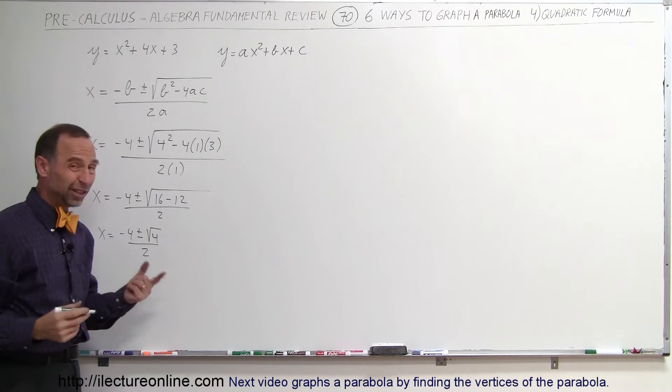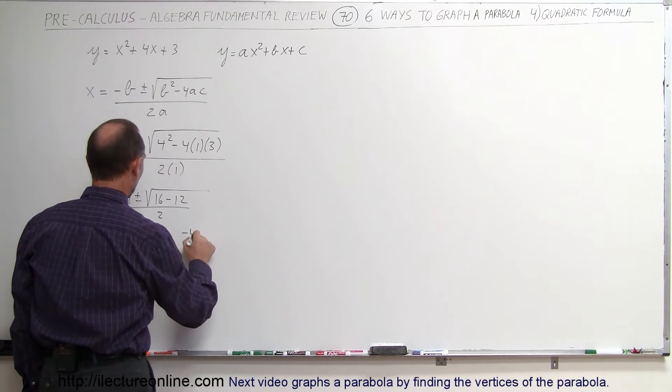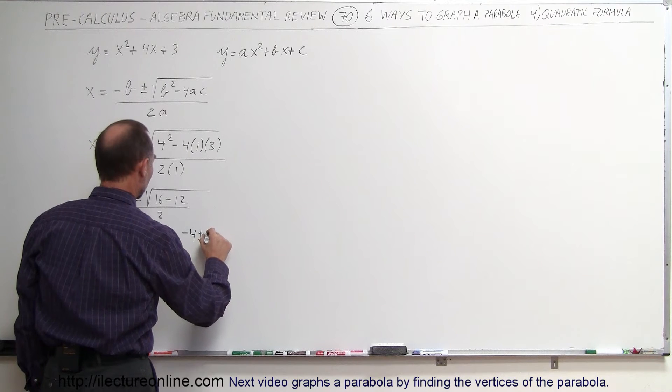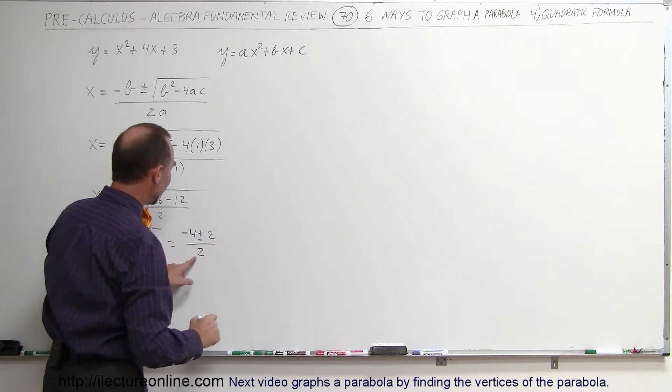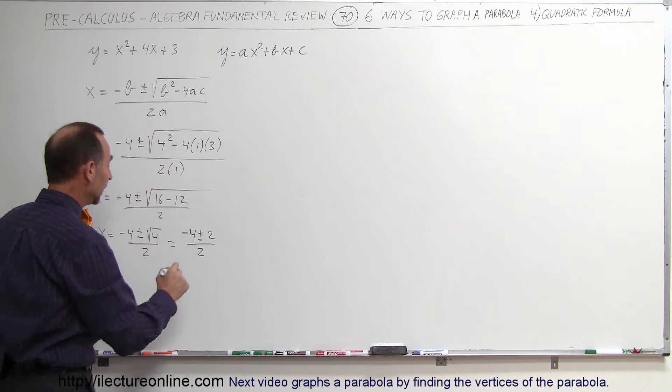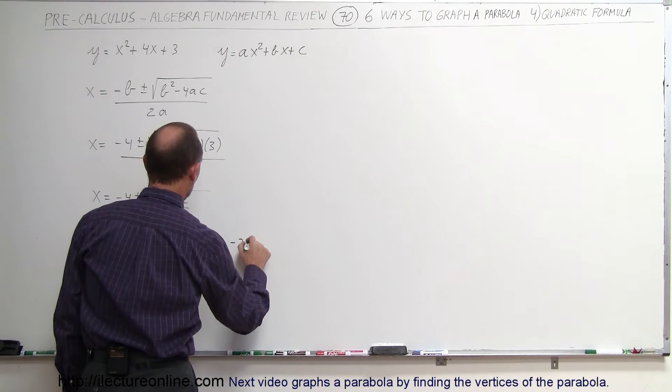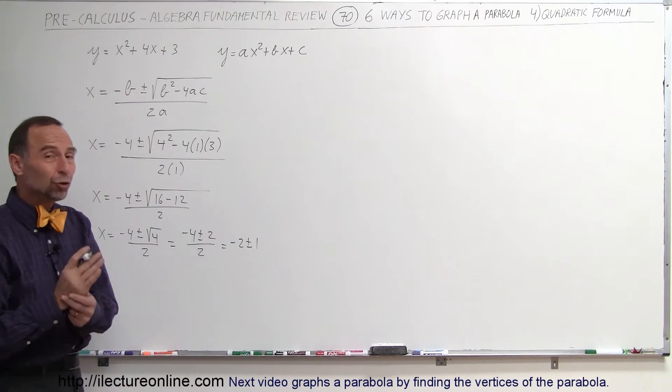And of course the square root of 4 is equal to 2. So this is equal to minus 4 plus or minus 2, divided by 2. And then we can divide the 2 into the two numbers in the top, and so this is equal to minus 2 plus or minus 1.